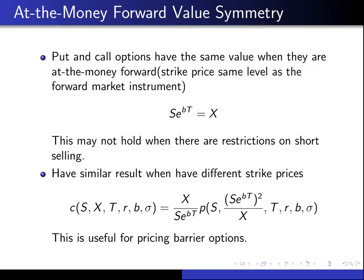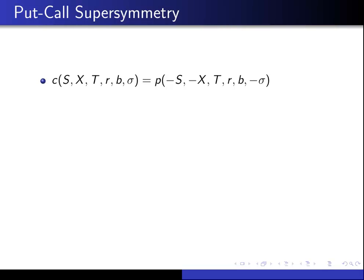Finally, we have the PUT-CALL supersymmetry. To get to that, we begin with the symmetry C is equal to P, where the variables for the PUT option are the same as for the CALL option, except we change the sign for S, X, and Sigma.